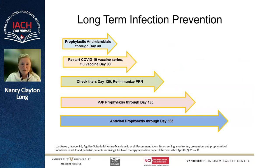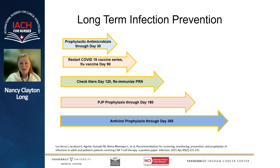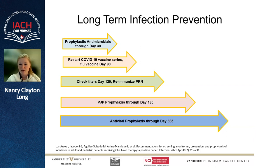For long-term infection prevention: antimicrobial prophylaxis through day 30, then starting vaccines at day 90 — typically COVID-19 and flu vaccine first. We check titers for our long-term patients and re-immunize as needed. PJP prophylaxis with Bactrim through six months, and antiviral prophylaxis for a year — typically until patients can get the shingles vaccine. Monitor closely for other potential viral infections such as CMV; we've seen reactivations at our center. Among one-year survivors, there's an average of two infections per year — mostly upper respiratory infections. Our clinic commonly sees patients messaging that they can't get rid of their cold or recover from COVID.